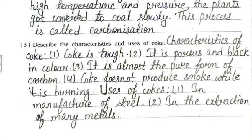Third: characteristics of coke — it is tough, porous and black in color, almost pure form of carbon, and does not produce smoke while burning. Uses of coke: it is used in the manufacture of steel and in the extraction of many metals.